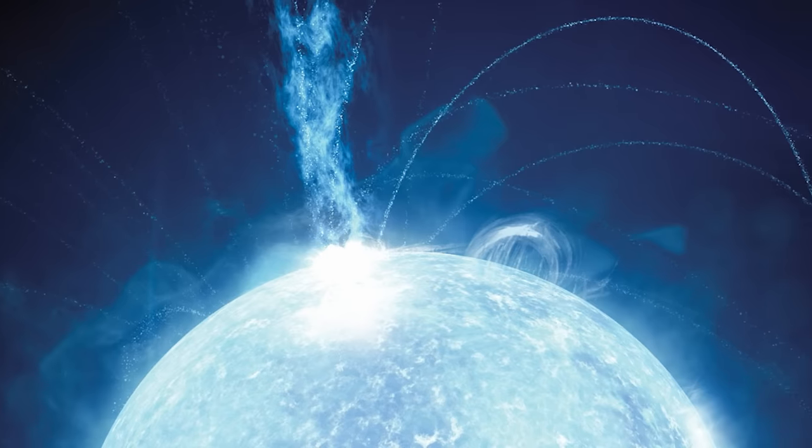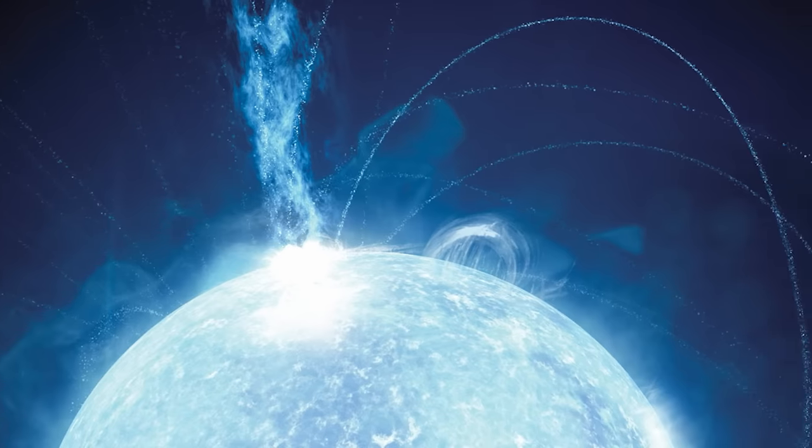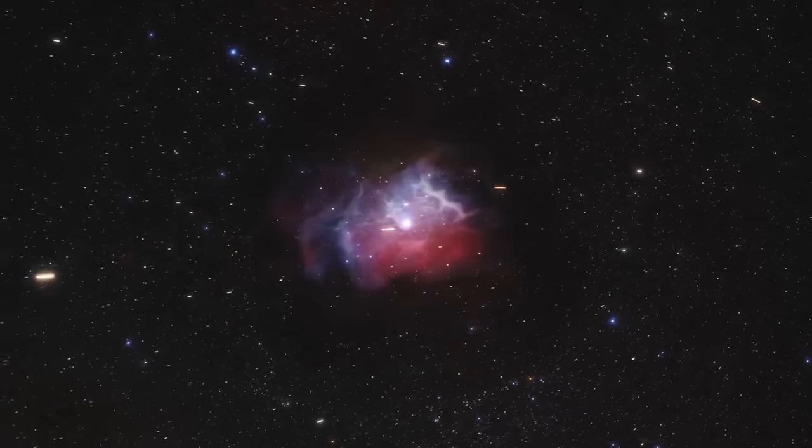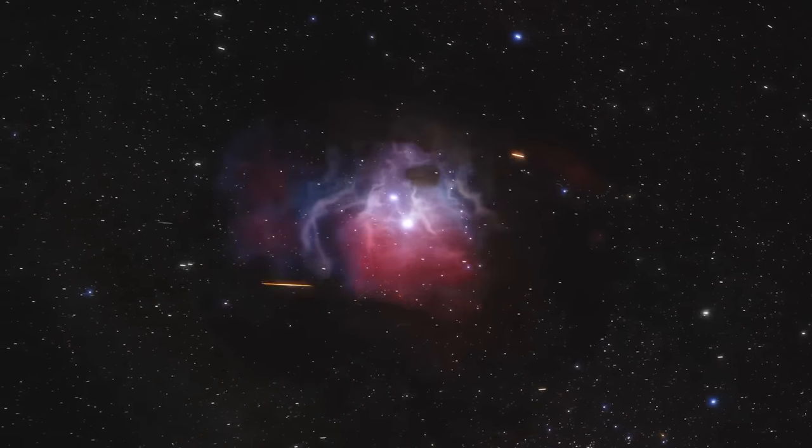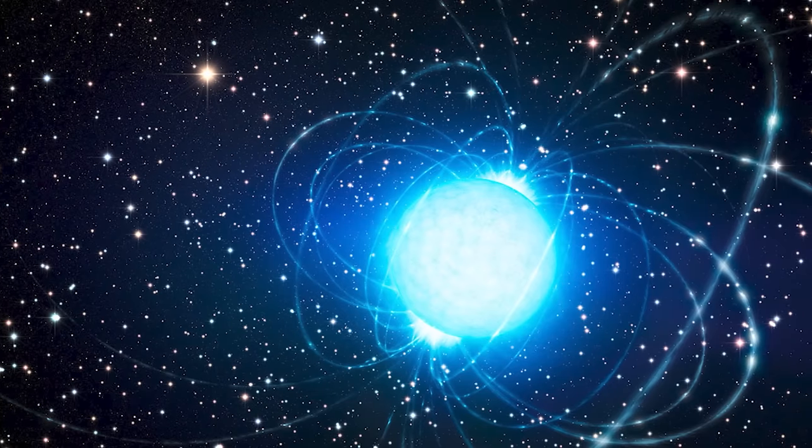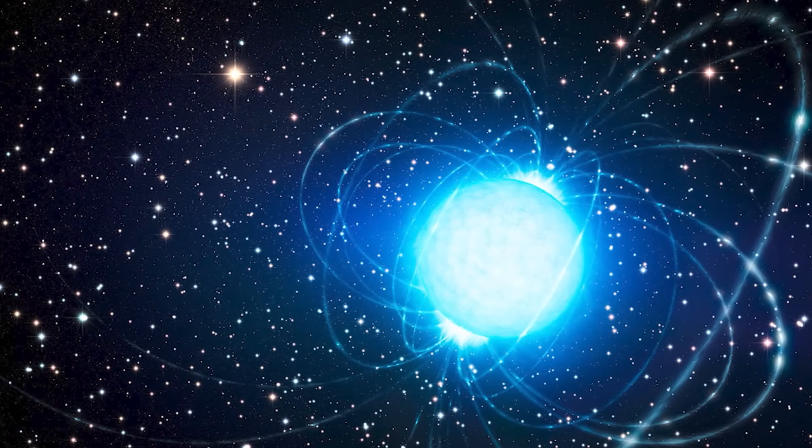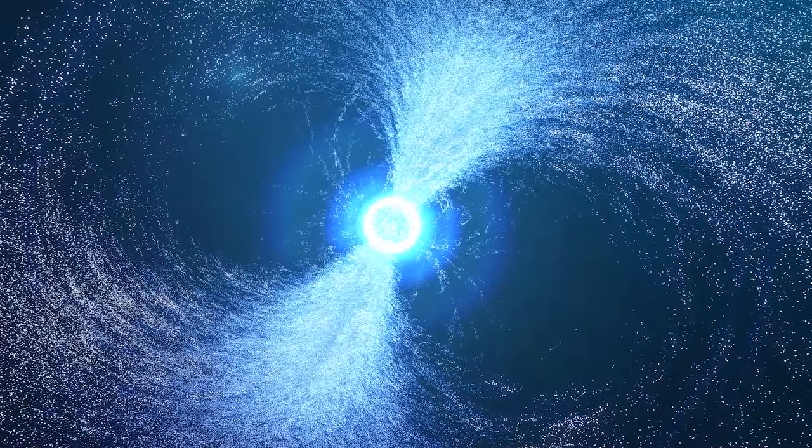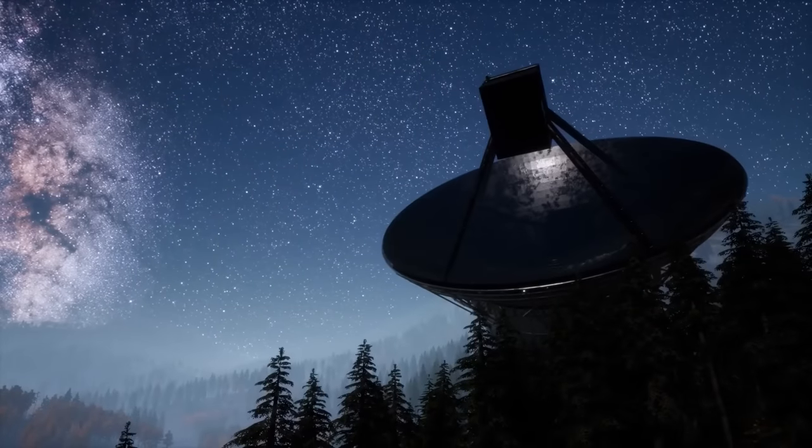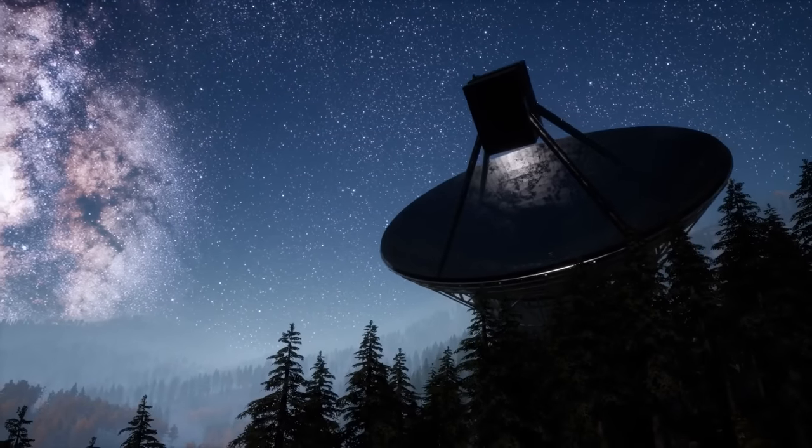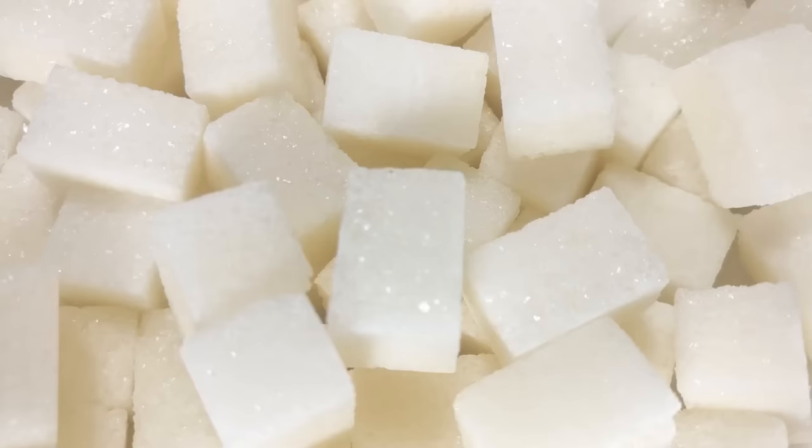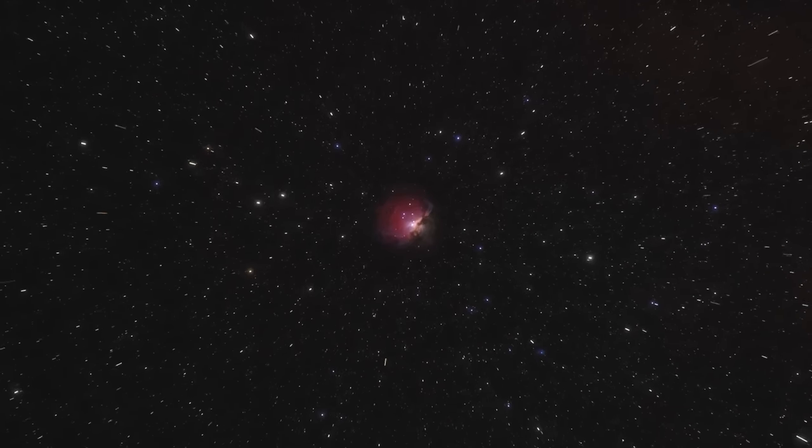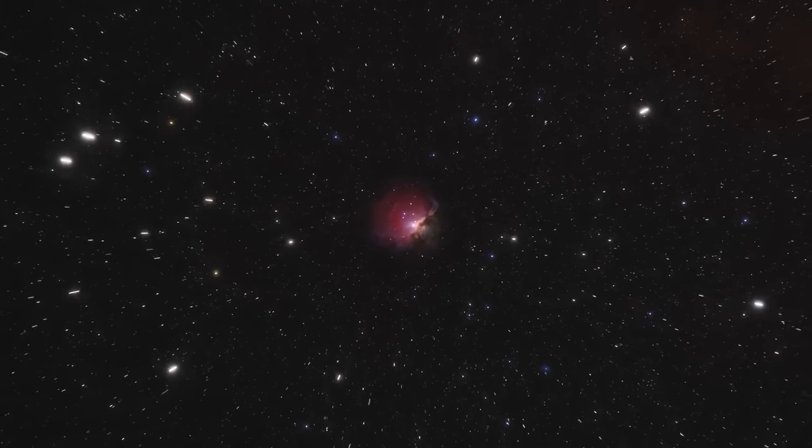Magnetars are some of the universe's most extreme objects. Essentially, they're a type of neutron star, remnants left after massive stars explode in spectacular supernovae. While all neutron stars are incredibly dense and possess strong magnetic fields, magnetars crank up the intensity to levels almost difficult to fathom. A teaspoon of material from a magnetar would weigh about a billion tons on Earth. Picture the entire human population condensed into a sugar cube, and you're starting to get a grasp of the staggering density of these objects.